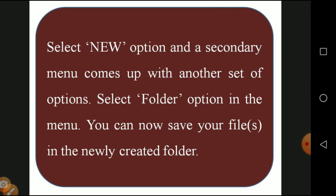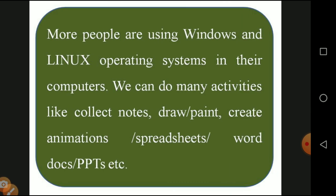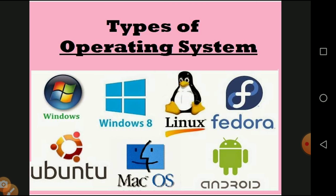To create a folder, right-click the mouse and a menu appears with multiple options. Select 'New', then a secondary menu comes up — select 'Folder'. The folder is created and you can give it a name. Many people use Windows and Linux as operating systems, also called OS. Different operating systems are available: Windows 8, Linux, Fedora, Ubuntu, Mac OS, and Android — these are the different types of operating systems.